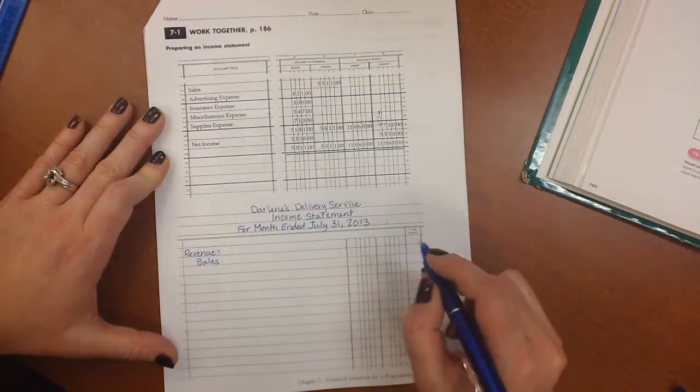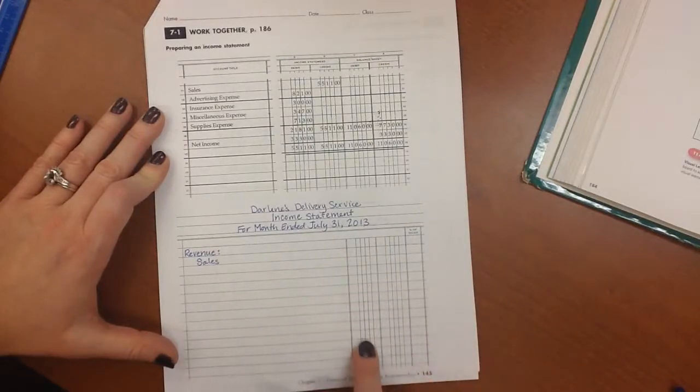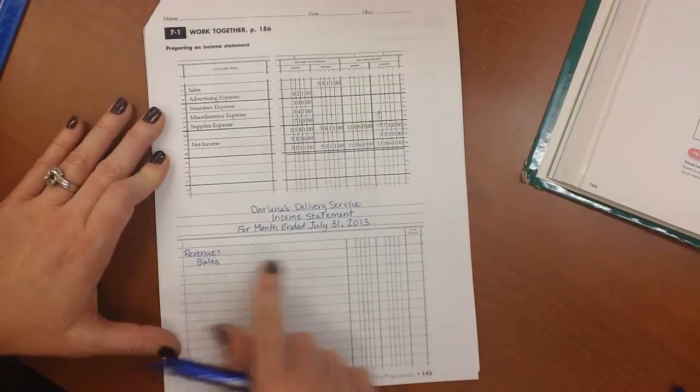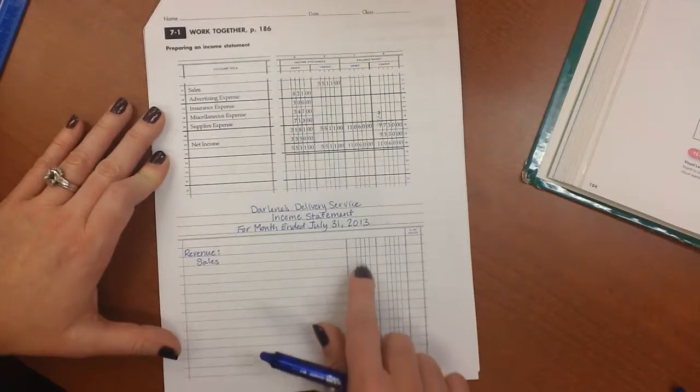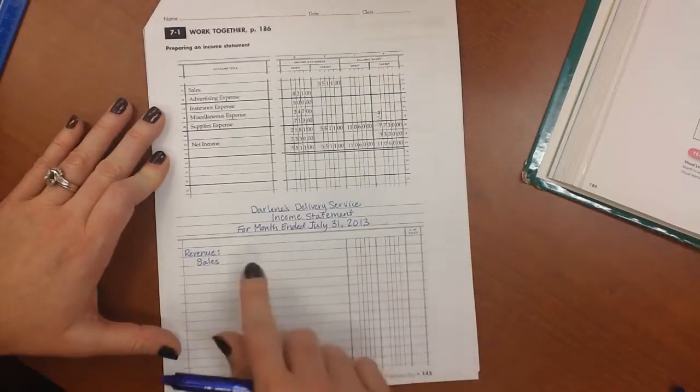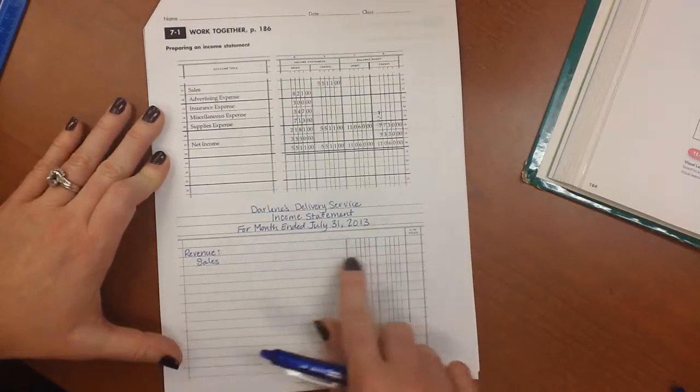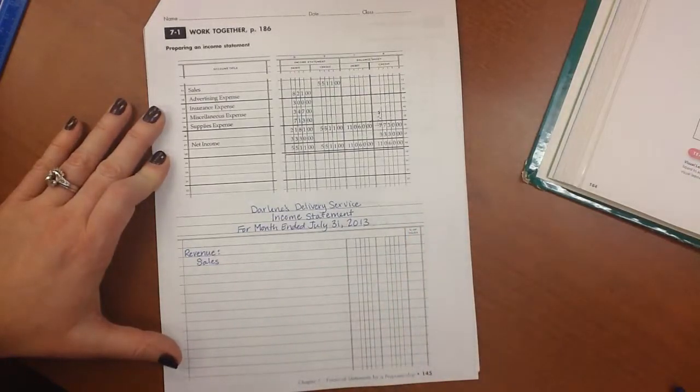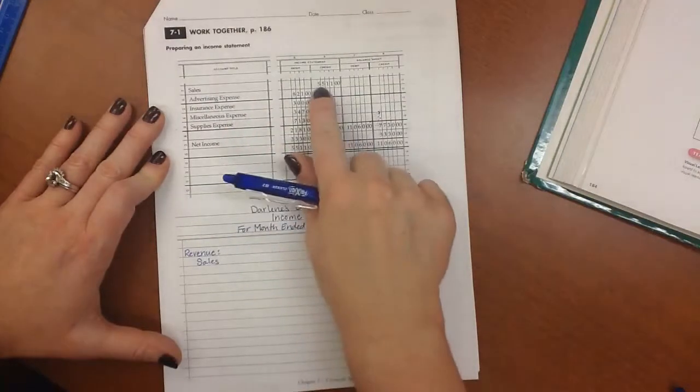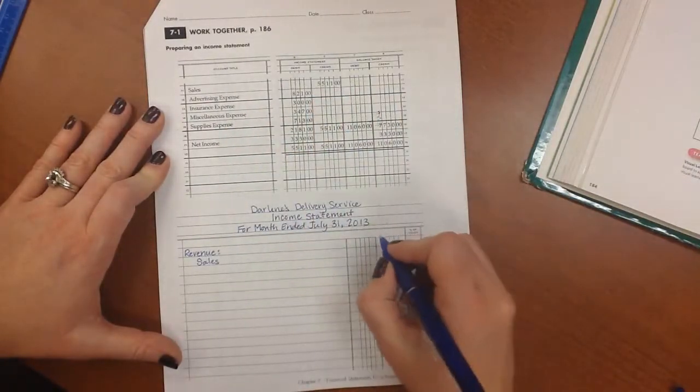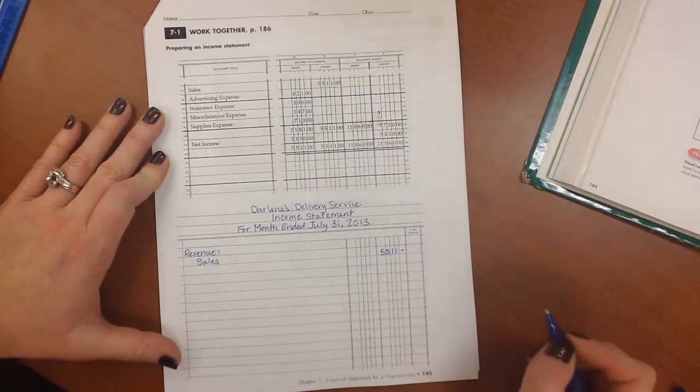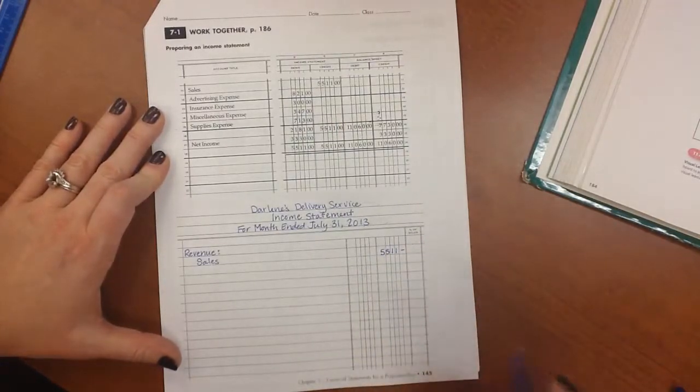And then the amount of sales. We have two columns. We have one column to record a listing of numbers and then a second column that will have the totals. Now we want to put every item for each category in the first column and then the total over here, but we only have one account. So we're just going to carry that total all the way over to the second column. And for this one our total is 5511. And then don't forget to put the dash there for our cents on this one.